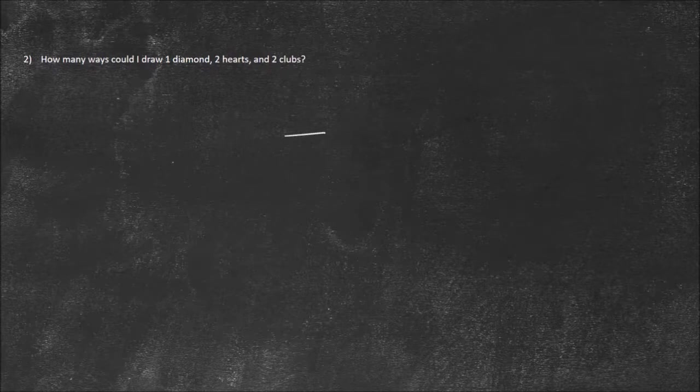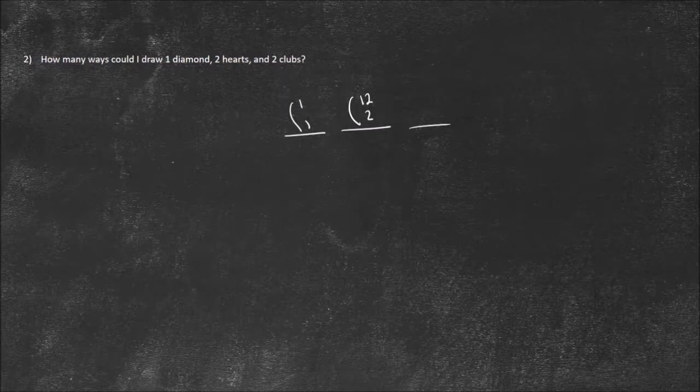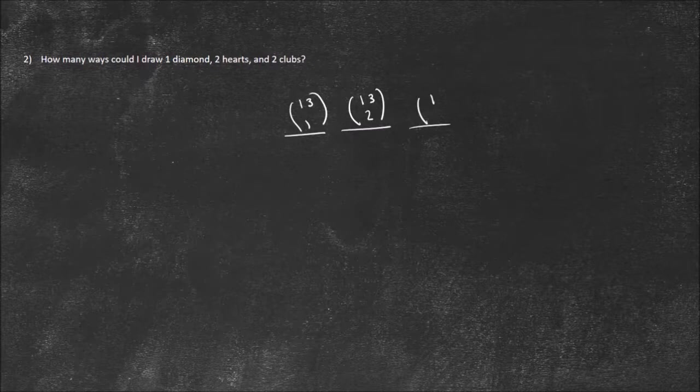Now a more specific one: how many different ways could I draw one diamond, two hearts, and two clubs? We think about this as three separate situations — how many chances do I get one diamond, how many chances do I get two hearts, and how many times could I get two clubs. I find the possible ways to draw one diamond: there are 13 diamonds, so 13 choose 1. Then two hearts: 13 choose 2. Then two clubs: 13 choose 2, because there are 13 cards in each suit.